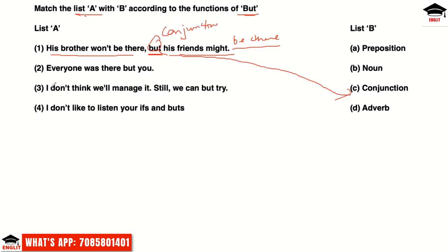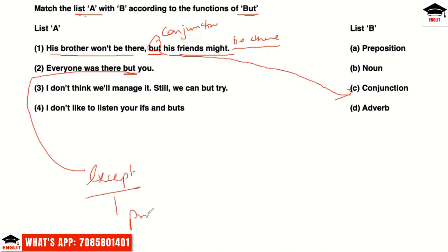The important thing is that 'but' joins two different individual or independent clauses. So its function here is that of a conjunction. Second sentence: 'Everyone was there but...' — here 'but' means 'except', which is a preposition. After 'but' we see a noun or pronoun following, so 'but' here is a preposition.